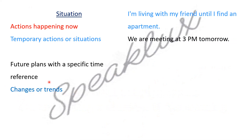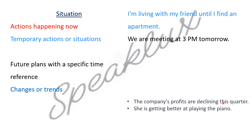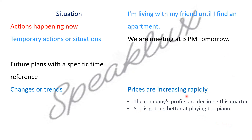Changes and Trends — if we have some changes or our trends change, like fashion changes or inflation prices change, then we will use Present Continuous Tense. For example, the company's profits are declining this quarter. At this time the profits are declining, they are decreasing, so we have used Present Continuous Tense. This activity is happening in the present; it started in the past and we don't know the effect in the future, but if we talk about the present now, the profits are declining — Present Continuous Tense. She is getting better at playing the piano — it means it was not happening in the past, now it is happening in the present, so again we will use Present Continuous Tense. One more sentence: prices are increasing rapidly. Prices are increasing, so we will use Present Continuous Tense.